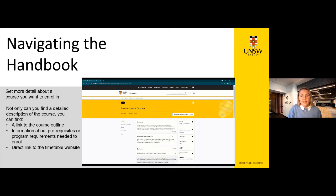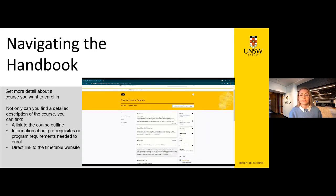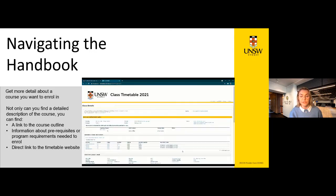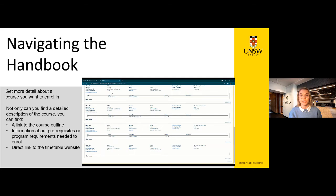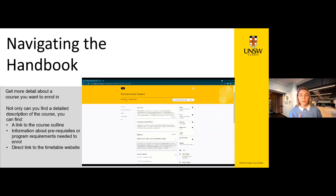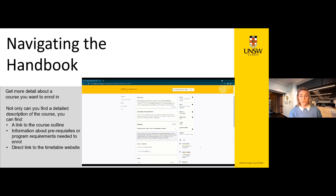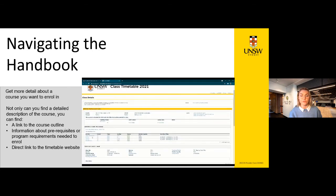When you go into a course page, you can find more details, including links to the course outline. This includes information on assessments, textbooks required, or who the course convener is. The course convener is the academic staff member with overall responsibility for coordinating the teaching of a particular course. They are generally the main contact for any issues or specific questions during the term, and their contact email is generally found in the course outline or on the UNSW timetable page. The course convener may also be your lecturer or tutor, and you'll get to know your tutor in the first few weeks of tutorials, labs or seminars.